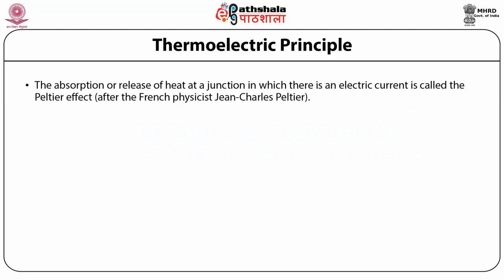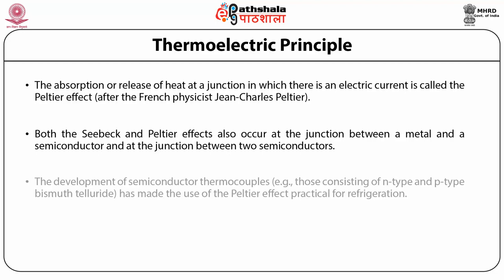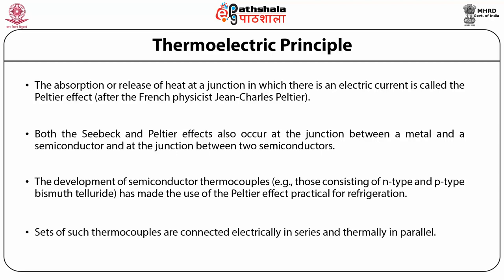The absorption or release of heat at a junction in which there is an electric current is called the Peltier effect, named after the French physicist Jean Charles Peltier. Both the Seebeck and Peltier effects also occur at the junction between a metal and a semiconductor and at the junction between two semiconductors. The development of semiconductor thermocouples — for example, those consisting of N-type and P-type bismuth telluride — has made the use of the Peltier effect practical for refrigeration. Sets of such thermocouples are connected electrically in series and thermally in parallel.